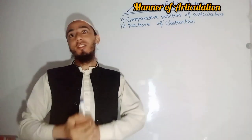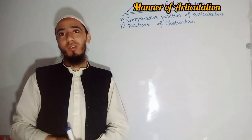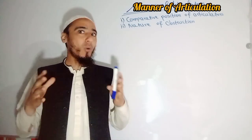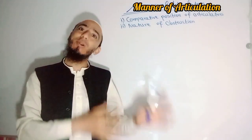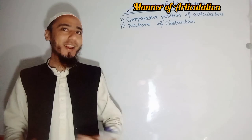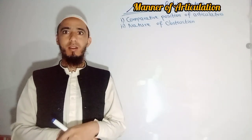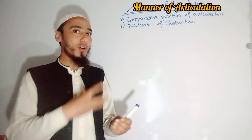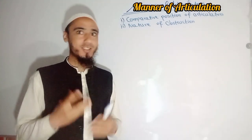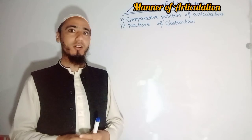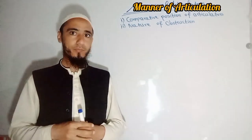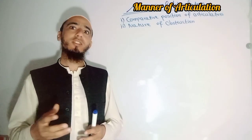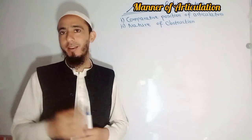Comparative position of articulators means what is the position of articulators whenever we are making sound. What are the different positions of articulators when we are producing sounds — either they are loosely open, openly open, widely open, or narrowly open. The active articulators are those which move toward passive articulators, like our tongue and our lower lip, which move to touch the upper lip. The tongue has parts like the tip, back, and blade, and all these are active articulators.